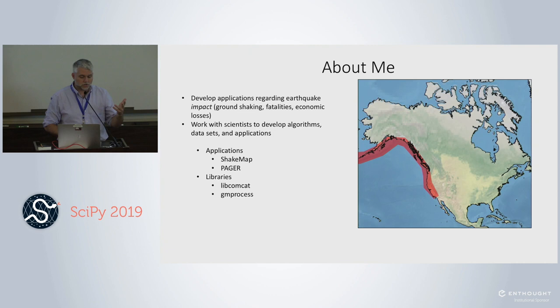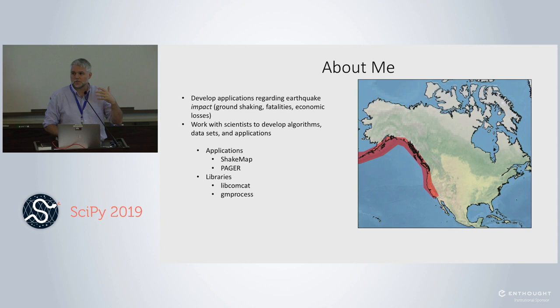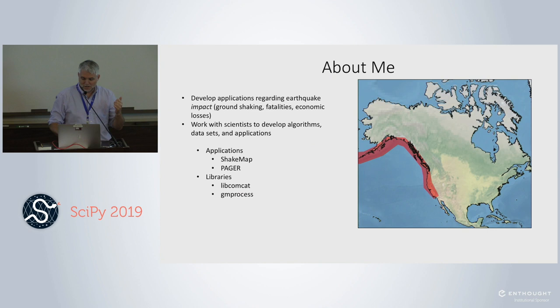The applications and libraries I've worked on are ShakeMap, which uses earthquake location and other information to make a map of ground shaking; PAGER, which informs people about the fatalities and economic losses from earthquakes; libcomcat, which I'll demo later; and gmprocess, which deals with the seismological data formats I was going to whine about but decided not to.